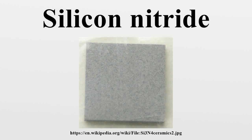Silicon nitride is a chemical compound of the elements silicon and nitrogen, with the formula C3N4. It is a white, high melting point solid that is relatively chemically inert, being attacked by dilute HF and hot H2SO4. It is very hard. It is the most thermodynamically stable of the silicon nitrides. Hence, C3N4 is the most commercially important of the silicon nitrides and is generally understood as what is being referred to where the term 'silicon nitride' is used.